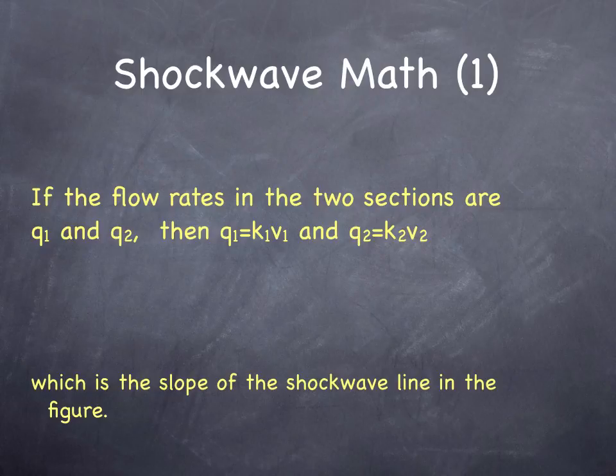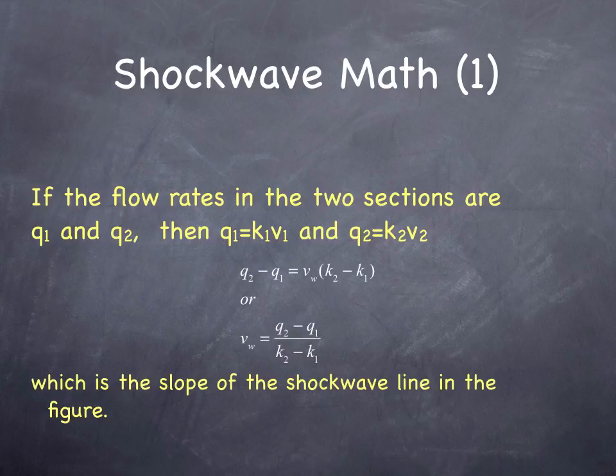Now we'll talk about the math of what's going on. We have flow rates in two sections. We call them Q1 and Q2. Q equals KV. Q1 equals K1 times V1. Q2 equals K2 times V2. The difference in flow equals the shock wave speed times the difference in densities. Thus the shock wave speed equals the difference in flows over the difference in densities. Q equals K times V. The shock wave speed is delta Q over delta K. That's the slope of the green line in the previous figure. This is the most important of these equations. Q equals KV, which means that V equals Q over K. The shock wave speed equals the difference of Q over the difference in K. Just keep that in mind. It's a definition. Essentially, to think about what's going on, it makes sense.